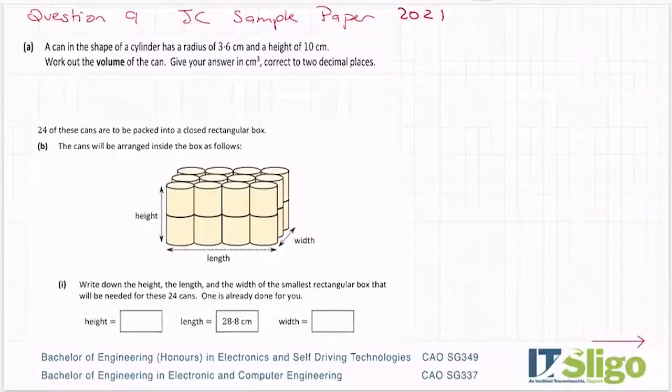Okay, so continuing on with the official sample paper for the Junior Cycle, the one that's on examinations.ie. Question nine looks like it's on volume. A can in the shape of a cylinder has a radius of 3.6 cm and a height of 10 cm. Work out the volume of the can. Give your answer in centimeters cubed, correct to two decimal places.